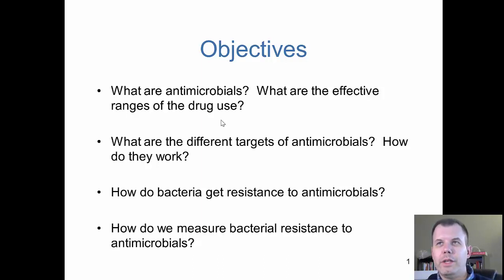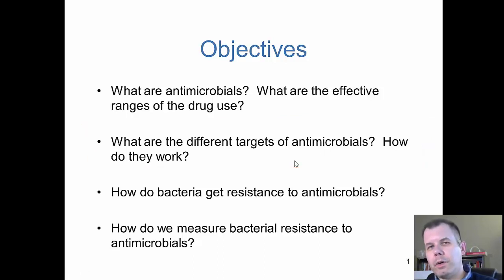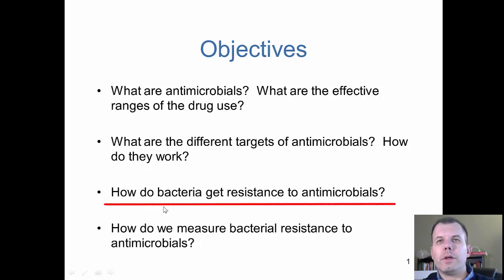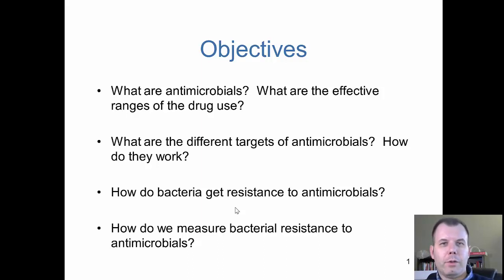Some drugs are very good at killing one thing and some are good at killing lots of things, which plays a role in treatment. We're also going to look at the different targets - cell walls, cell membranes, proteins, DNA, and RNA - and one other: binding to cells, which is with viral infections. Then we'll talk about how bacteria get resistance through conjugation, transformation, and transduction. We'll also cover other resistance mechanisms: thicker cell walls, protein pumps that pump antibiotics out, and thicker glycocalyx.